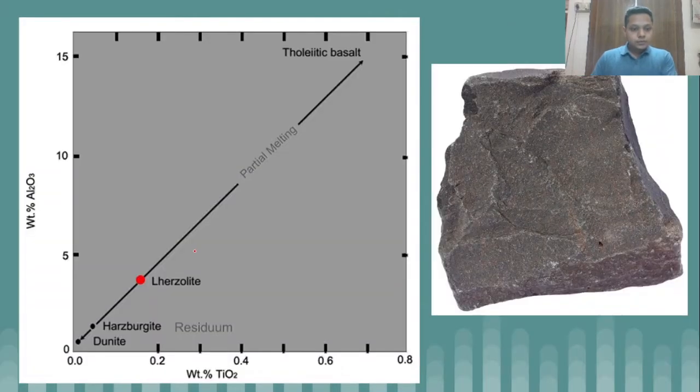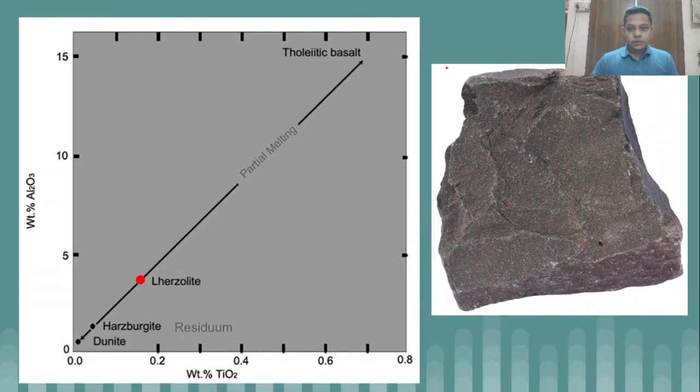Basalt is a dark-colored ultrabasic rock and plutonic and hypabyssal equivalents of basalt are gabbro and dolerite. We get basalt when we partially melt the mantle or the mantle rock which is essentially having a composition of lherzolite. When we partially melt the lherzolite, the residuum gets richer in mafic content such as harzburgite or even dunite, which is a monomineralic rock containing more than 90 percent olivine.